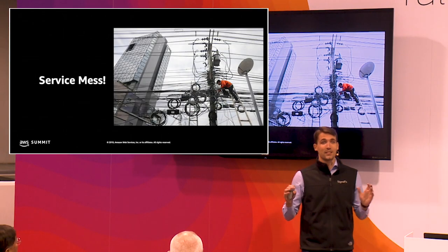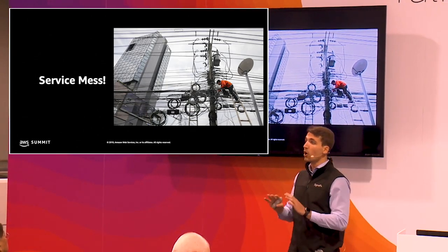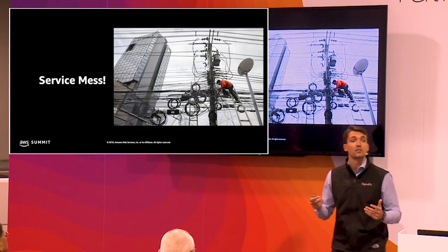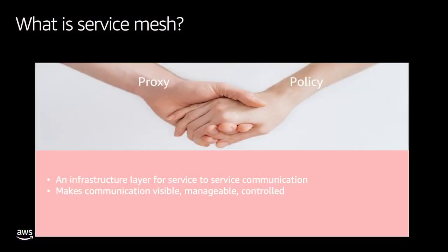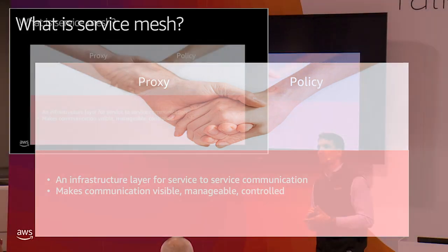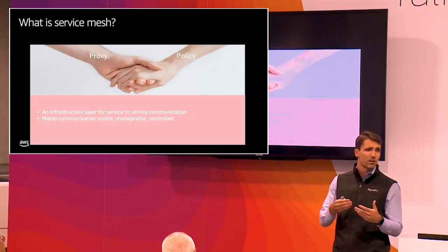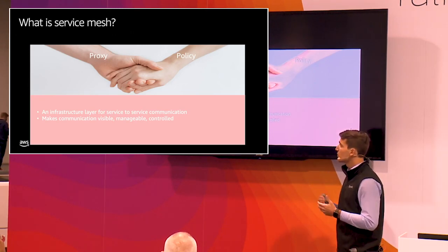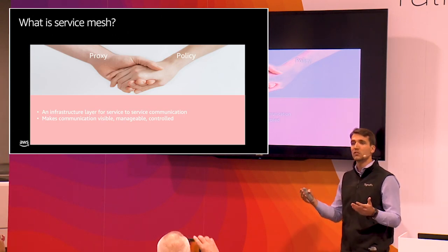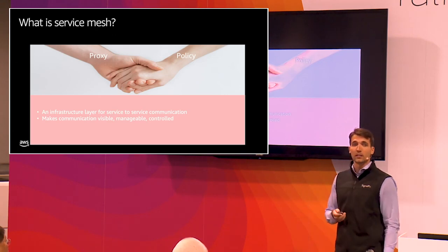It's become a Service Mesh — all of these complexities from monitoring environments, the interconnectivity between all of your microservices. How do you make sense of this? Cue Service Mesh. Service Mesh is an infrastructure layer for service-to-service communication, essentially making your communication visible, manageable, and controllable.